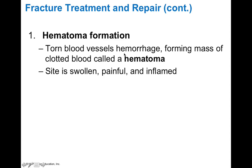In stage one, hematoma formation, torn blood vessels hemorrhage and bleed into a space, forming a mass of clotted blood called the hematoma. This hematoma sets the stage for repair because growth factors are nearby, it prevents additional bleeding, and it forms a substrate for cells to invade and replace the blood clot with fibrocartilage. At this stage the site is swollen, painful, inflamed, and weak because blood clots are not strong.